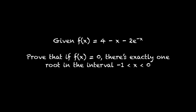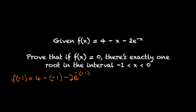Let's take a look at an example. Given f of x is equal to 4 minus x minus 2e to the negative x, prove that if f of x equals 0, then there's exactly one root between minus 1 and 0. Let's begin by checking if there's a change of sign between minus 1 and 0. So f of minus 1 is equal to 4 minus negative 1 minus 2e to the power of 1, which equals 4 plus 1 minus 2e. Since e is about 2.7, 2e is approximately 5.4.